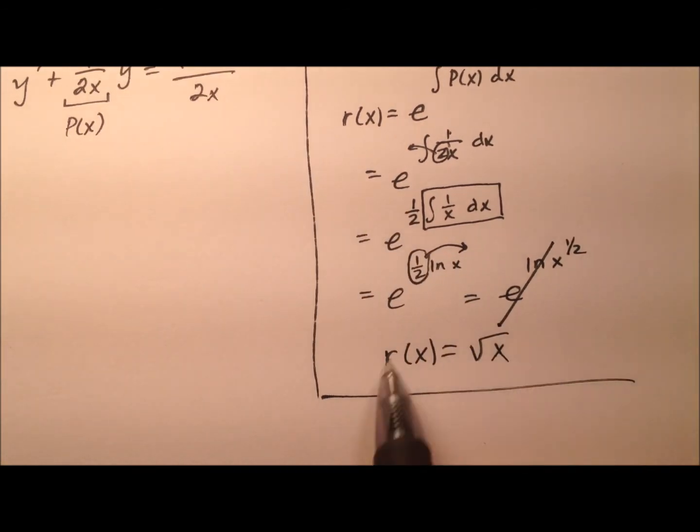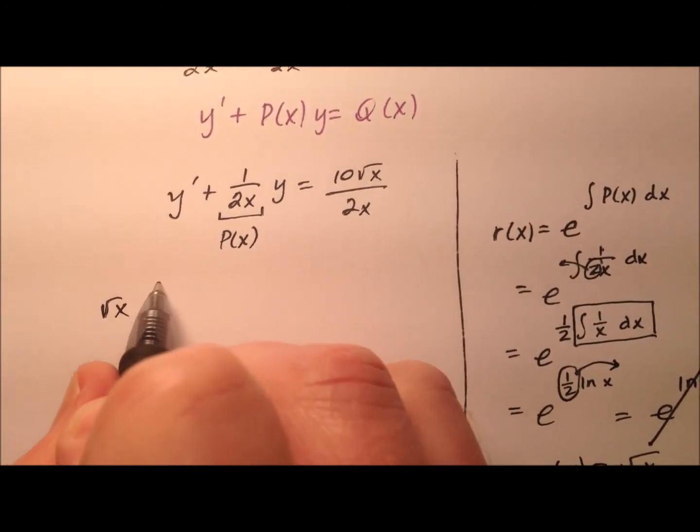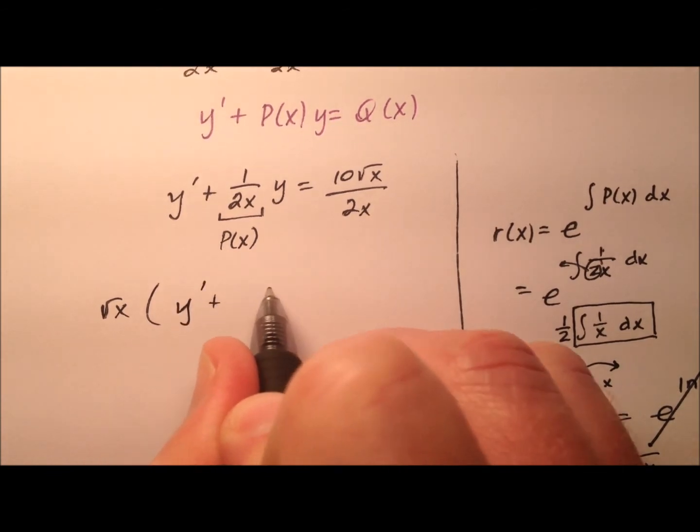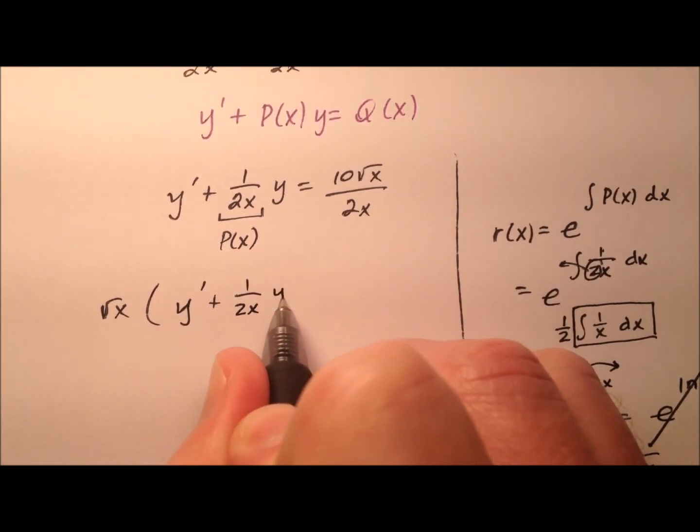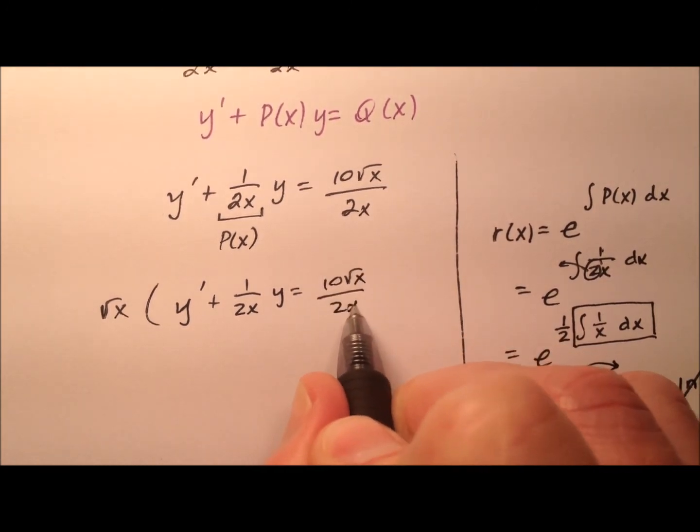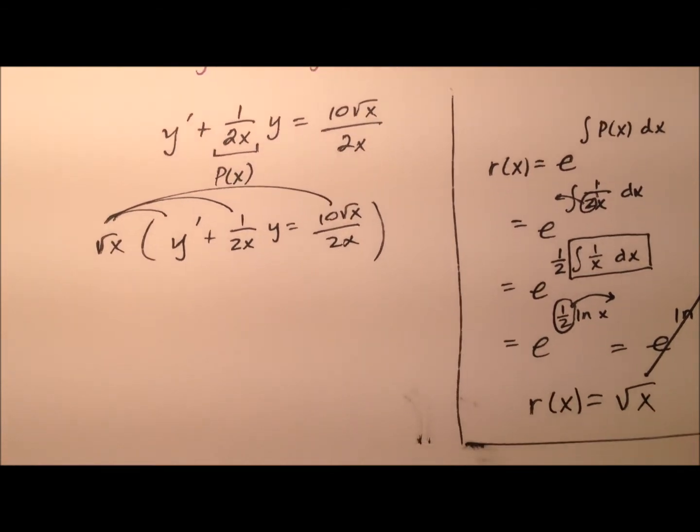Okay, well, what am I going to do with this integrating factor? Well, I'm going to multiply it through by my entire differential equation here. So y prime plus 1 over 2x times y equals 10 times the square root of x over 2x. And I'm going to multiply that through every single term.